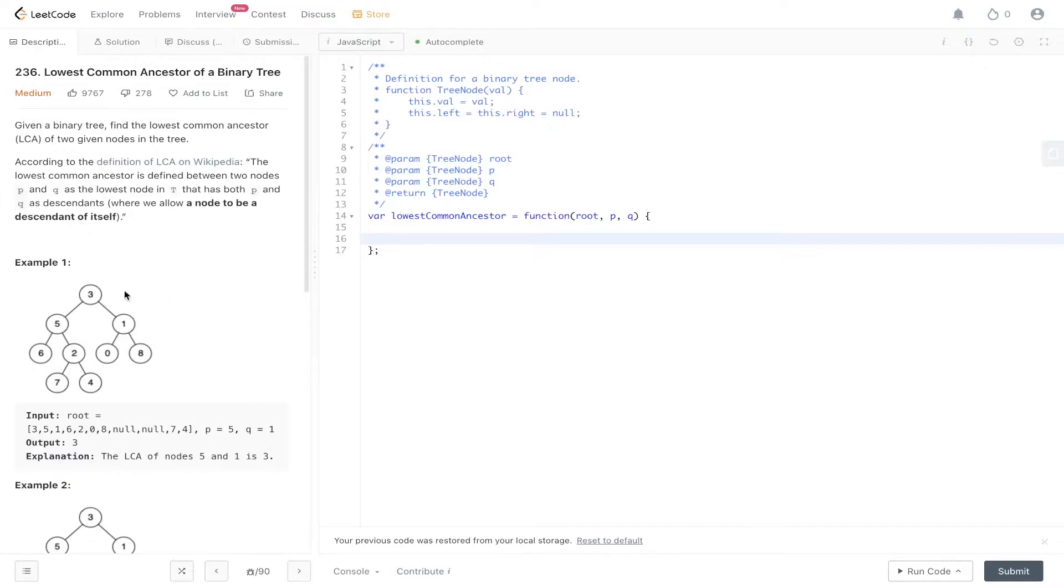So what does that mean? In the first example, we have P which is equal to 5 and Q which is equal to 1. The lowest common ancestor of both 5 and 1 is its parent, which is 3. So it's the first parent of both P and Q.